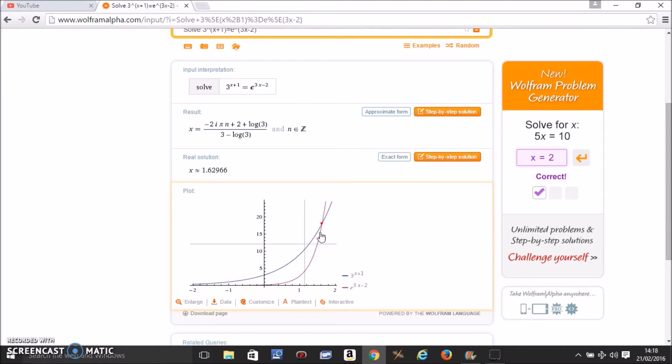Also, the graph shows up for the two functions. It tells you that the blue one is 3 to the power x plus 1 and the red one is e to the power 3x minus 2. The point where they meet is the solution.